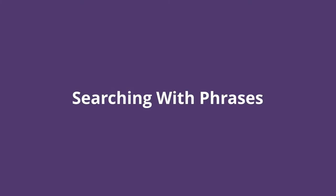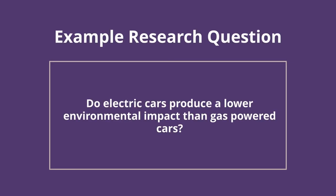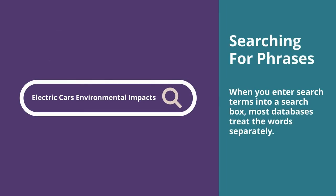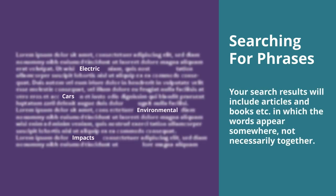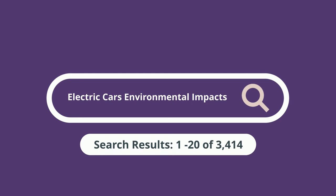You can use phrase searching to make sure the words you're searching for are found together. To understand how this works, let's use the following research question as a basis. When you enter search terms into a search box, most databases treat the words separately. Your search results will include articles and books, etc., in which the words appear somewhere, not necessarily together. You end up with a large number of search results, many of which may be irrelevant to your search.